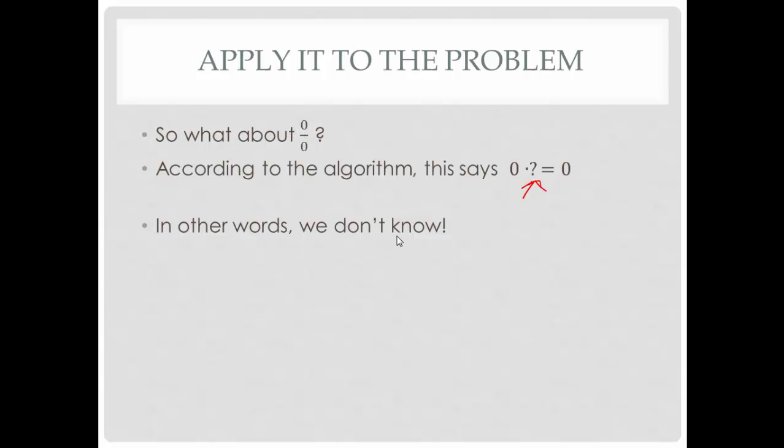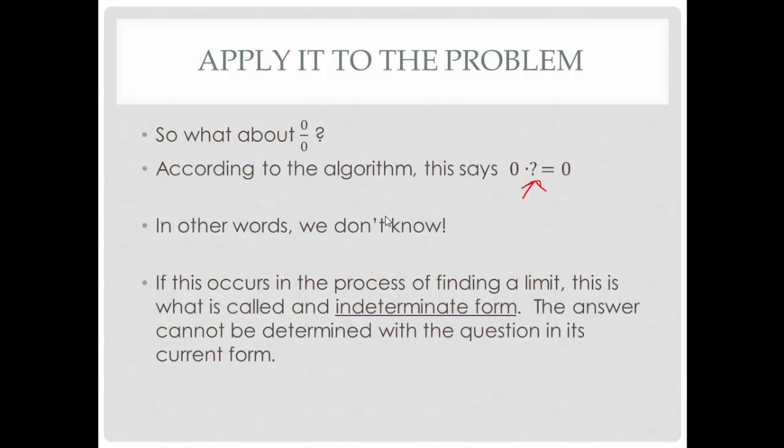Unless you think I've led you down a long path where the answer is we don't know, that's actually an important thing in calculus. This is what we refer to as an indeterminate form. When you work with a limit and you come up with 0 over 0 while you're calculating that limit, it's called an indeterminate form. And what that means is the answer can't be determined as long as you're looking at the question in its current form. In other words, if you want to find the answer, you're going to have to change the form of the question because right now you can't do it.